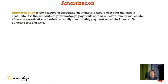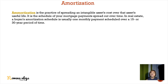Amortization is the practice of spreading an intangible asset's cost over the asset's useful life. In real estate terms, this is a monthly amortization. After your down payment period — for example, once you are done paying the 20% and the unit is turned over — the financing institution will give you a schedule showing when you will pay your monthly amortization for your loan.